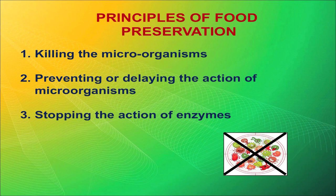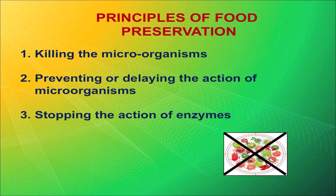Now I will tell you about the basic principles of food preservation. Number one is killing the microorganism — they are the ones who spoil the food and grow very rapidly, so the first principle is to kill microorganisms. Second, you need to prevent or delay the action of microorganisms. Microorganisms are tiny creatures present all around the world and in our surroundings — if you give them a conducive environment they keep multiplying, so we need to prevent their action to preserve food. Then there are enzymes present within the food; we have to stop the action of enzymes by different methods.